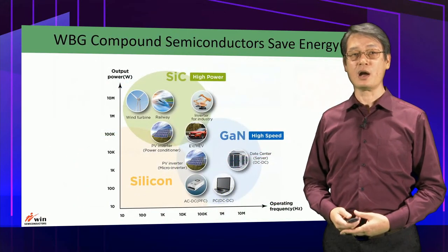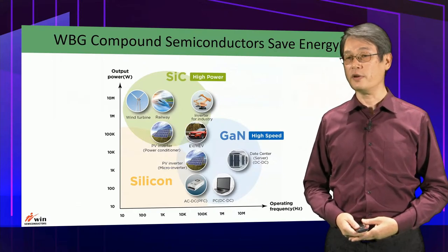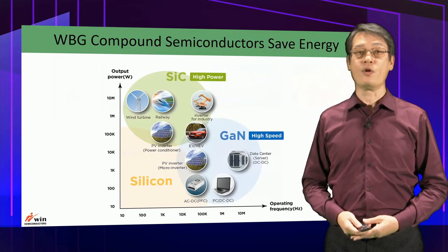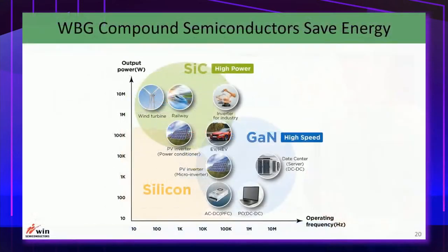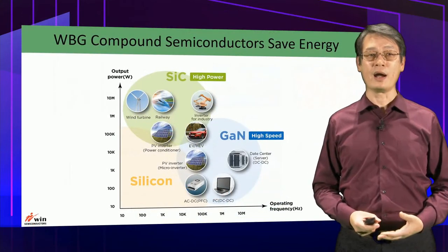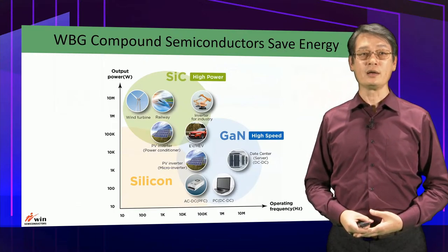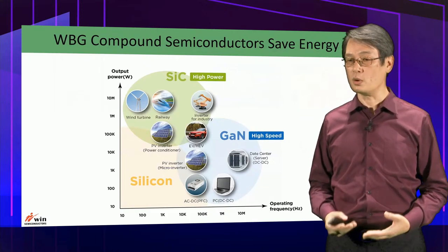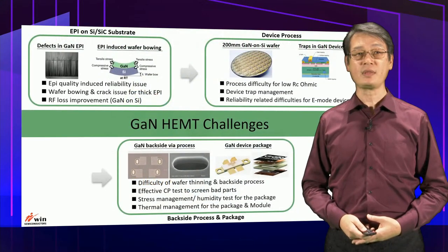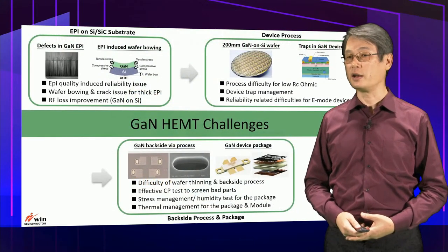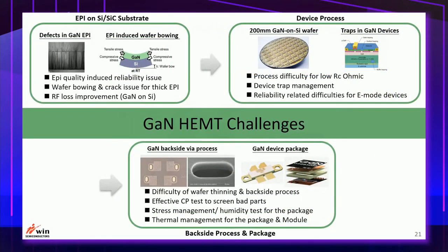This diagram shows output power versus operating frequency for various power conversion applications. For the highest power applications, silicon carbide is the technology of choice. For high operating frequency applications, gallium nitride is the best candidate. Electric vehicles fall in the middle, with silicon carbide currently dominating. Gallium nitride could catch up in the future as the technology matures. There are still many technology challenges for gallium nitride, ranging from substrate and epitaxial material processing to reliability and packaging.